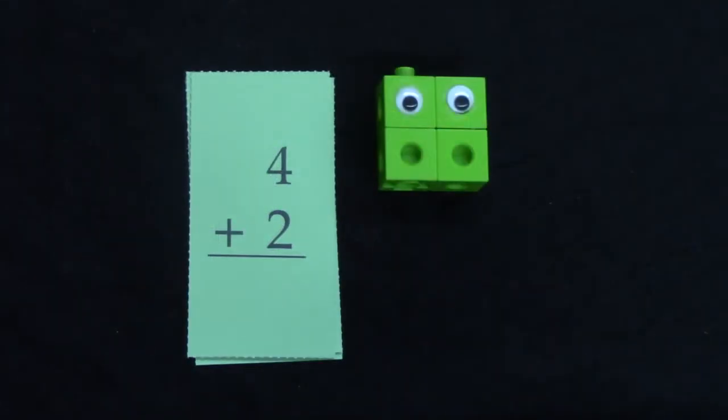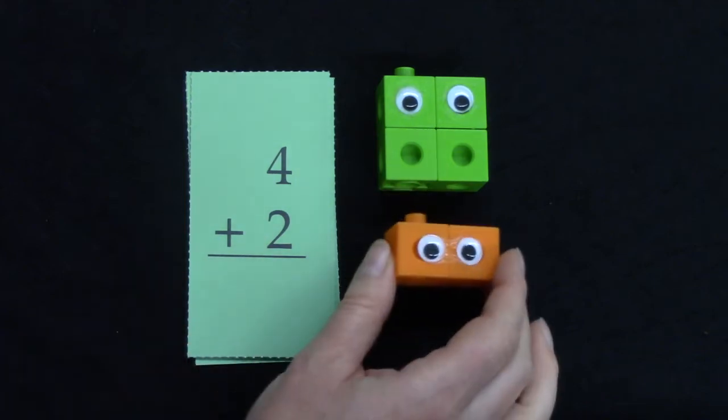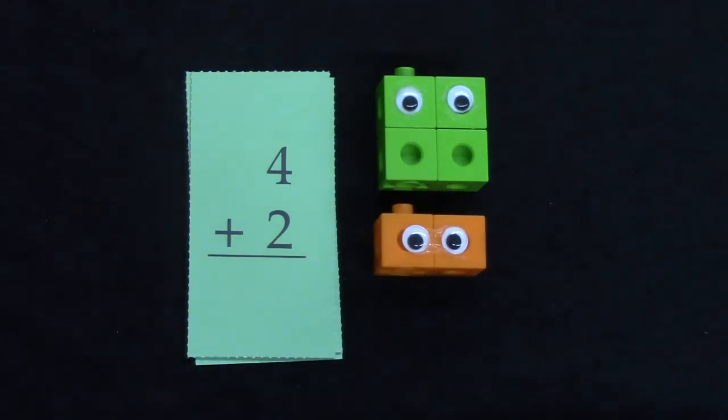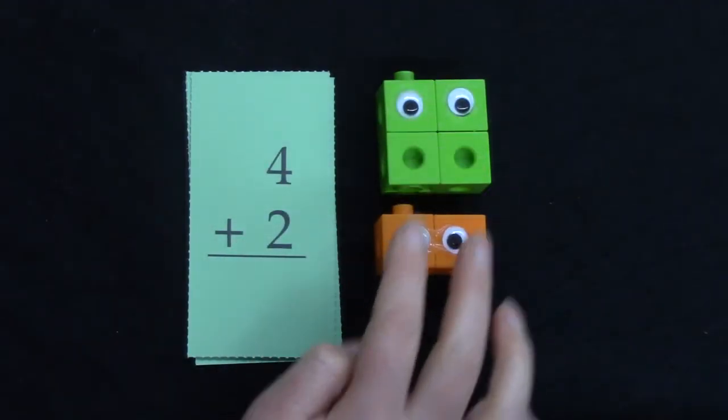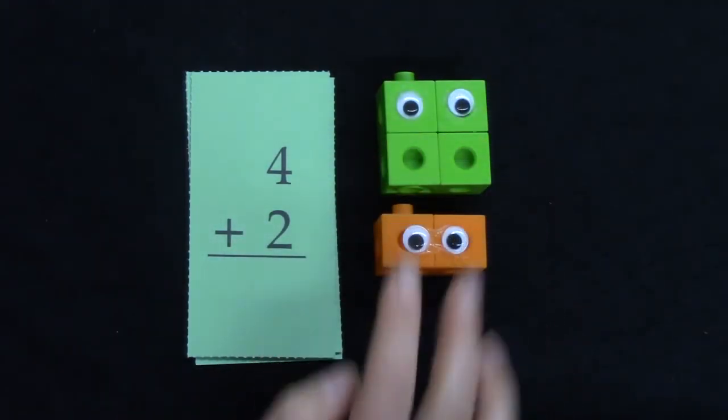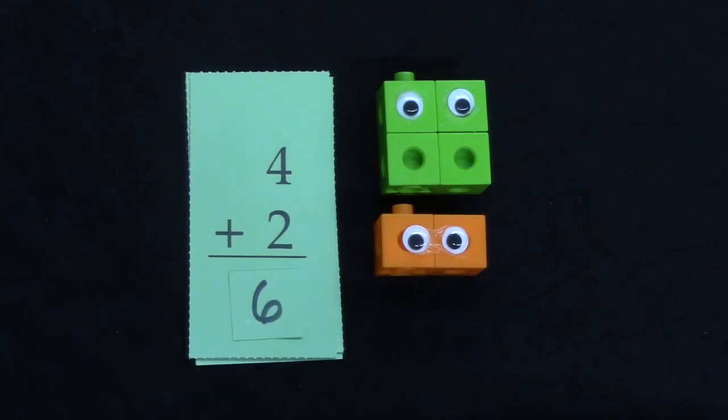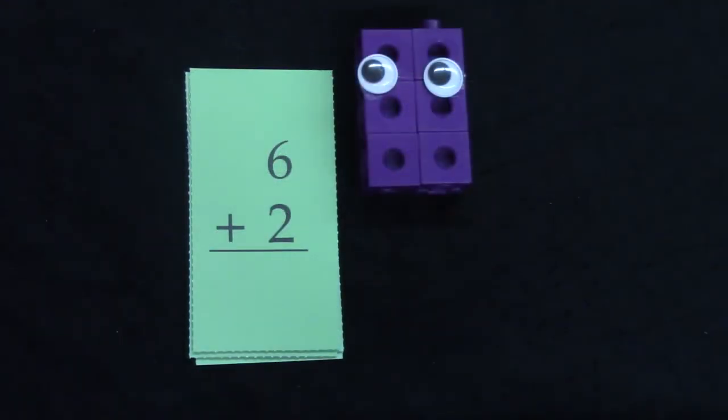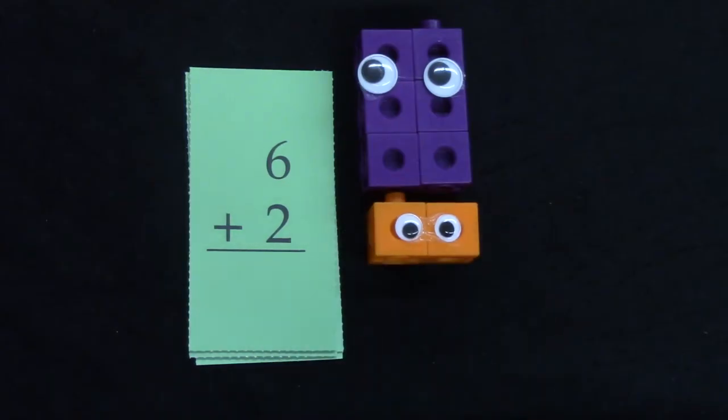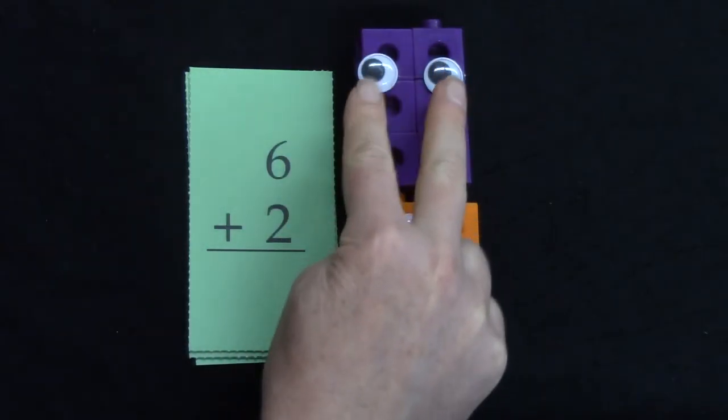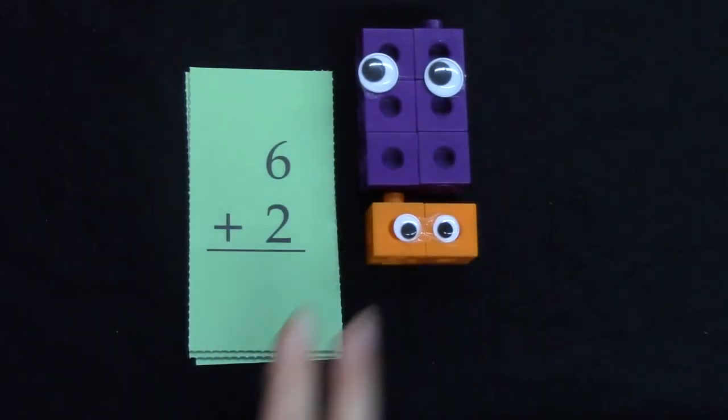If we have 4 snap cubes and we add 2 more, how many do we have? 4 plus 2 more, 2, 4, 6. 4 plus 2 is 6. If we have 6 snap cubes and we add 2 more, we have 2, 4, 6, 8.